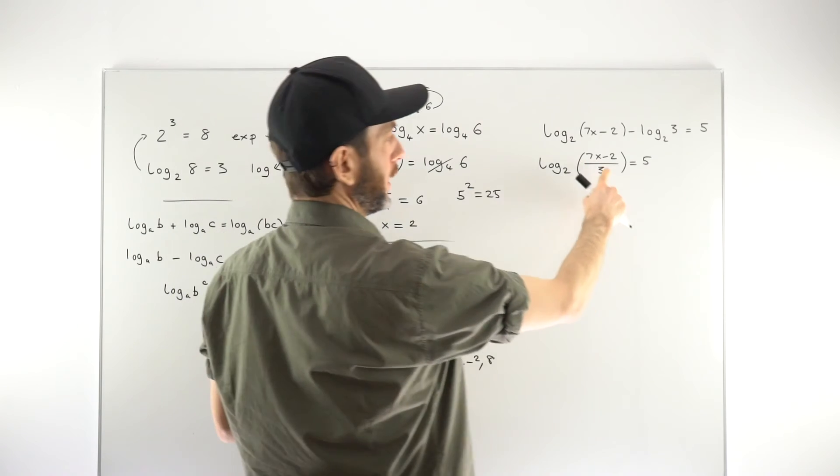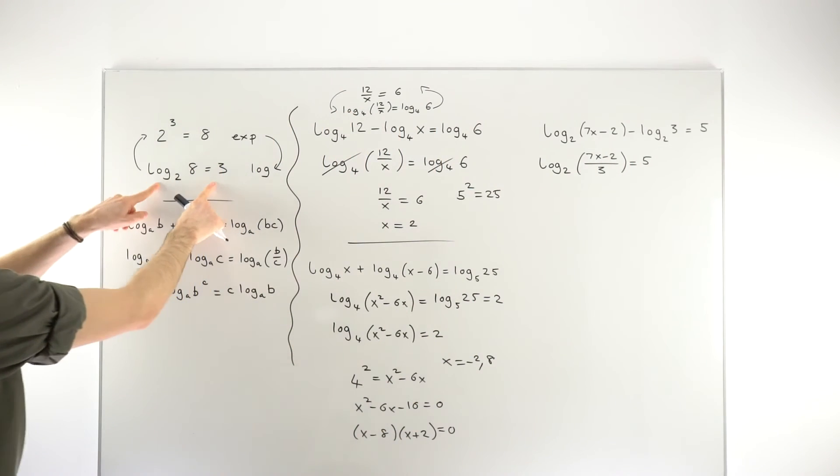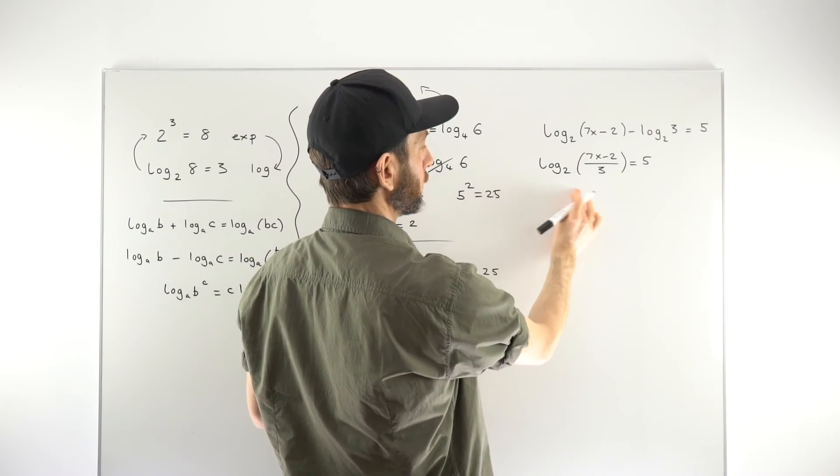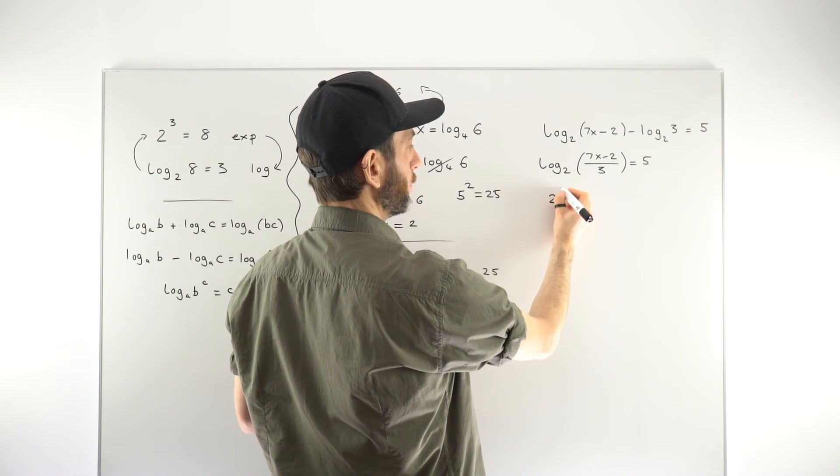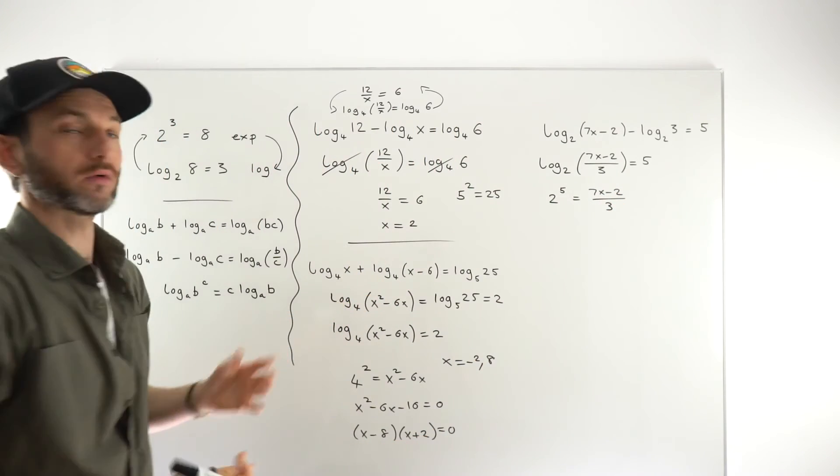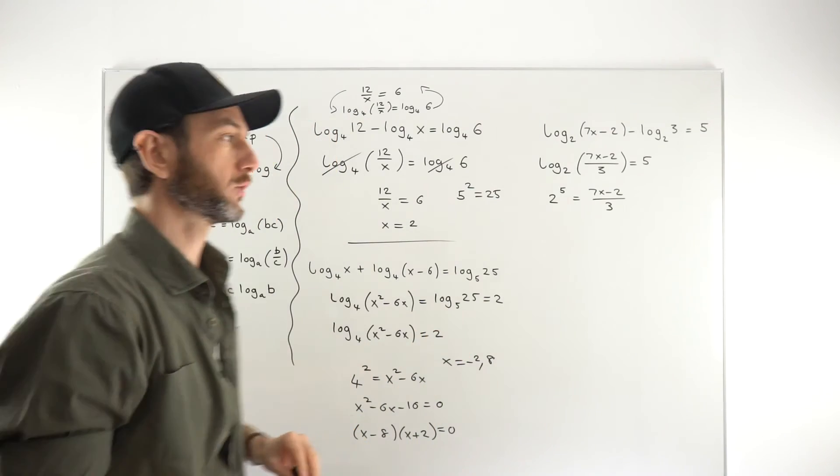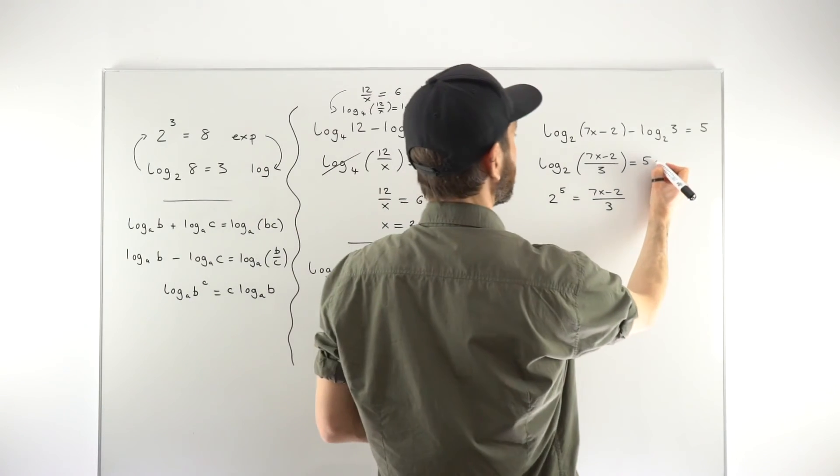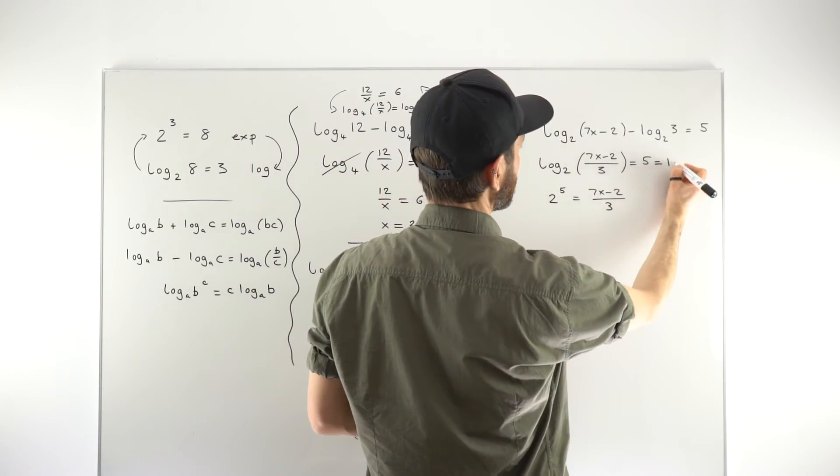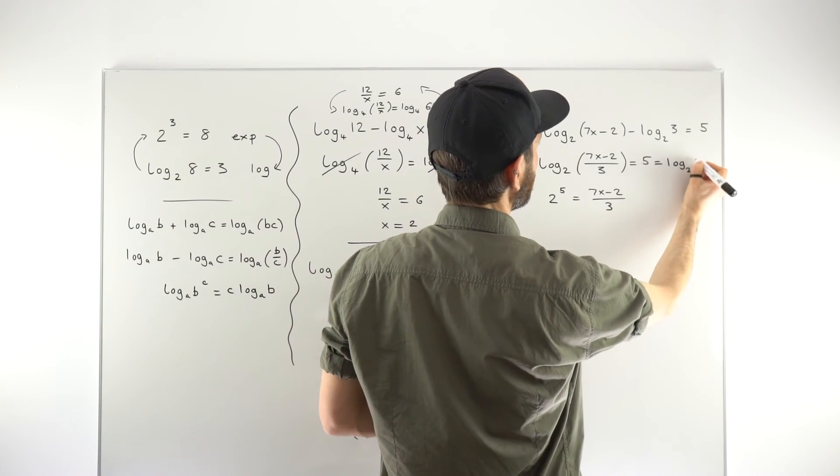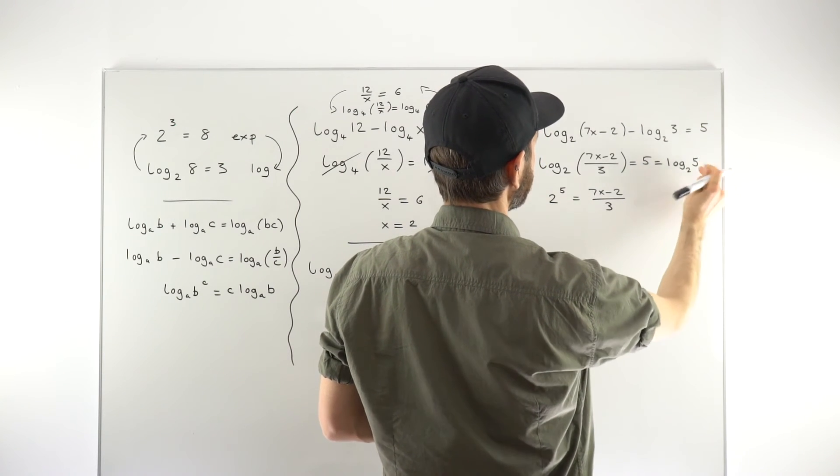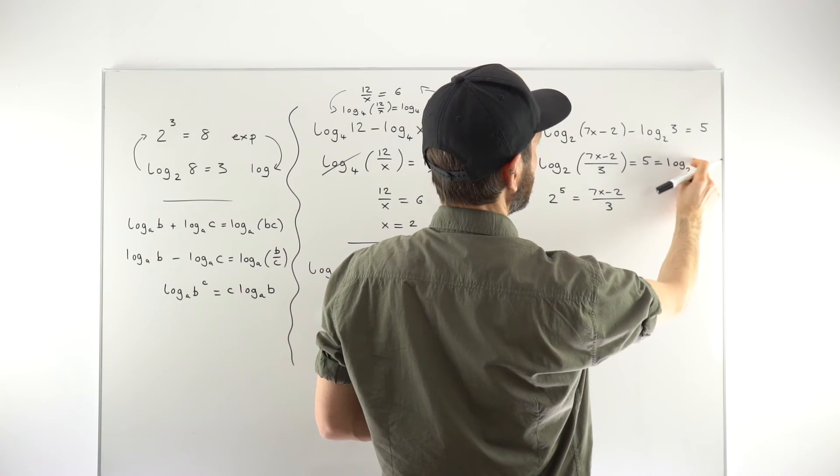So what are we going to do now? Well, even though this looks a little ugly and we've got just a number over here, this again matches this correct format for turning it into an exponential. So what we would do here is just say, 2 is the base number. We're going to put the power of 5 on that and that equals 7x minus 2 over 3. That's just that rearrangement again that you need to learn. So that rearrangement is super important in these questions.